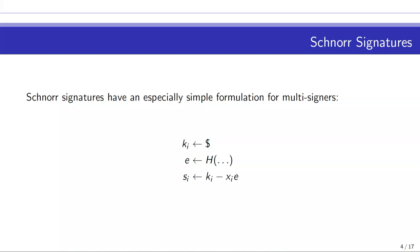The provable security story for Schnorr is quite a bit better than for ECDSA. Let me start by talking about a couple of issues with single Schnorr signatures, then multi-signatures, and then threshold signatures. The problems keep layering up in practice.